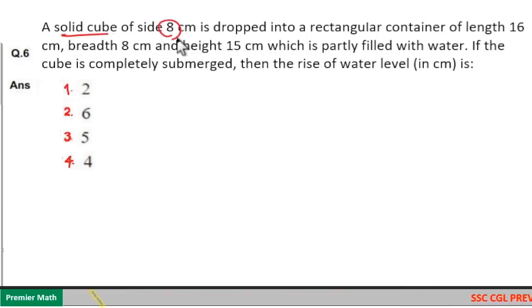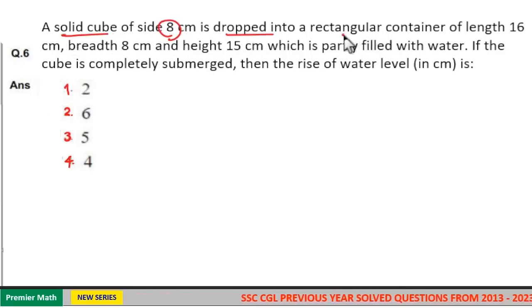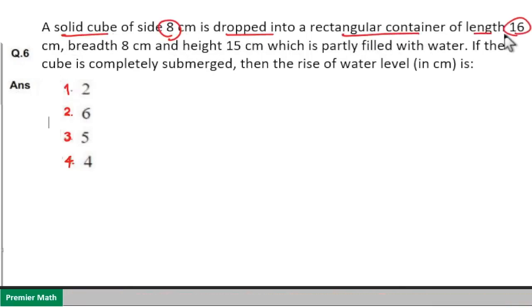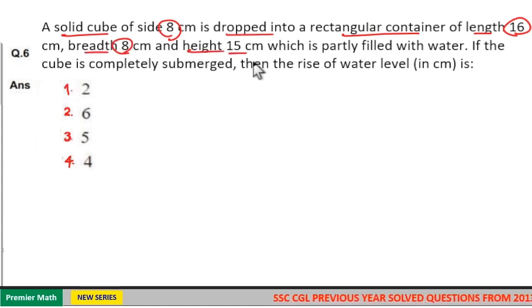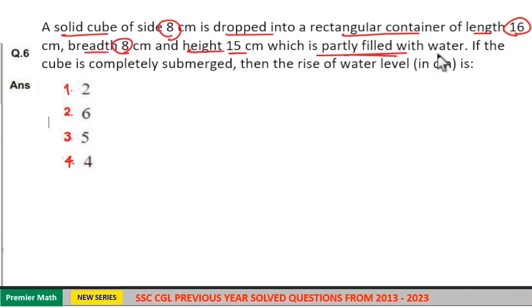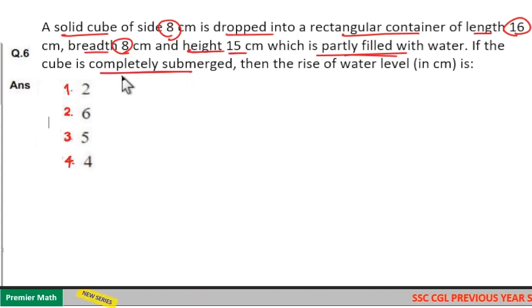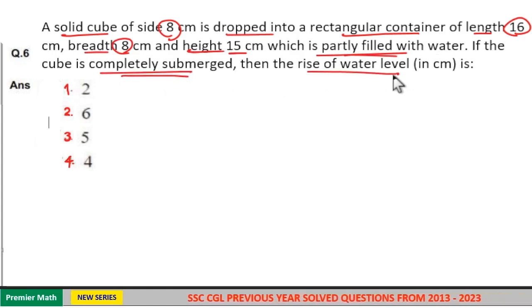A solid cube of side 8 centimeters is dropped into a rectangular container of length 16 centimeters, breadth 8 centimeters, and height 15 centimeters, which is partly filled with water. If the cube is completely submerged, then the rise of water level is to be found.